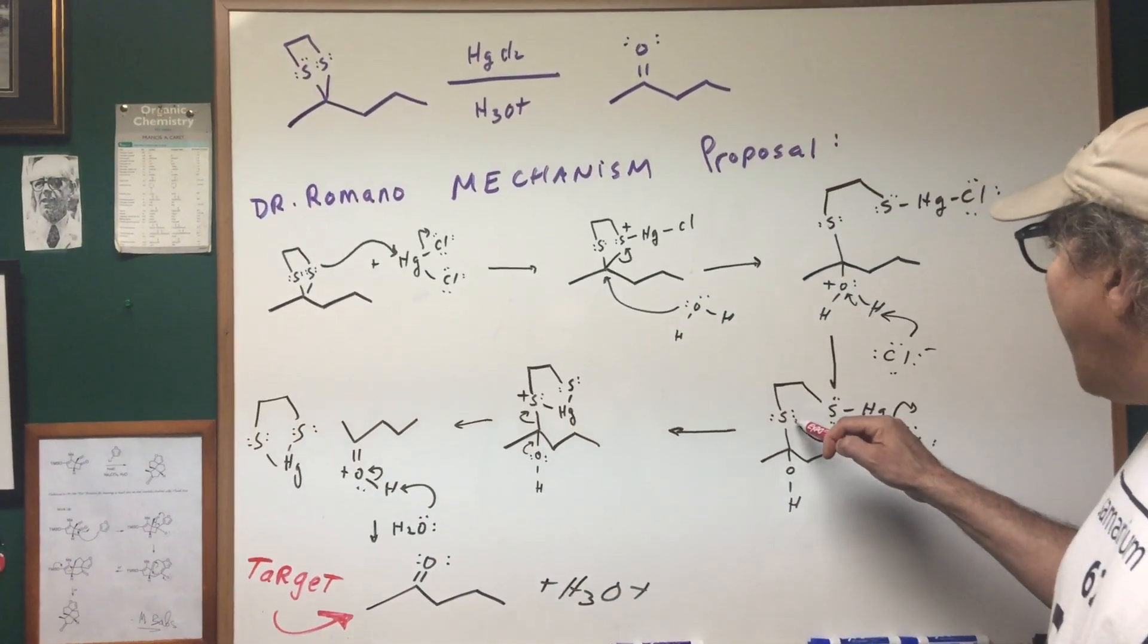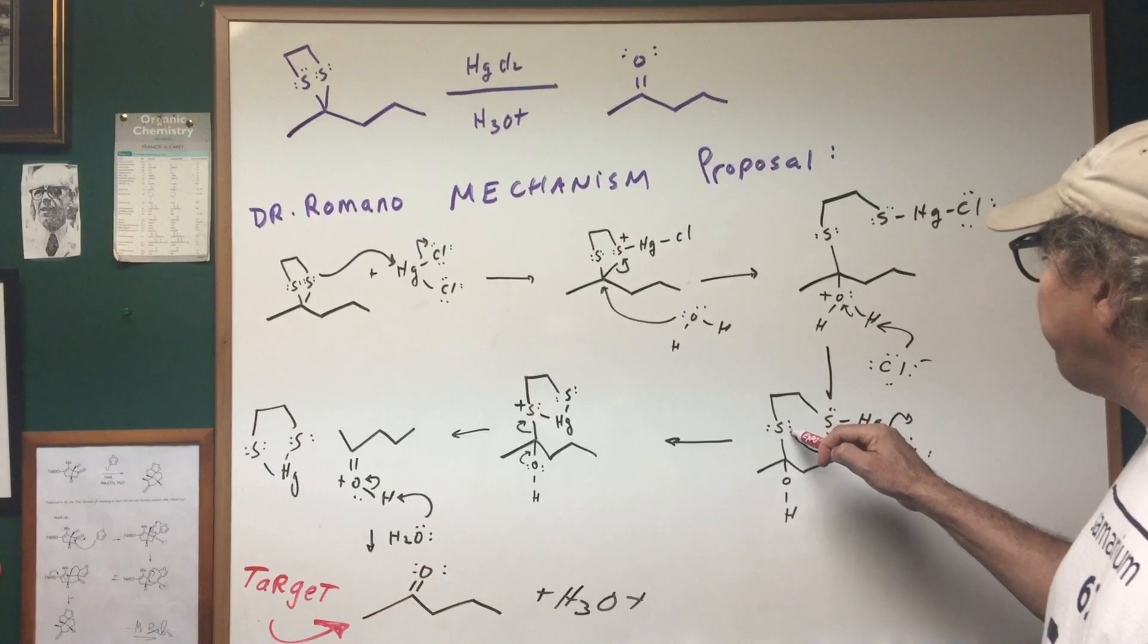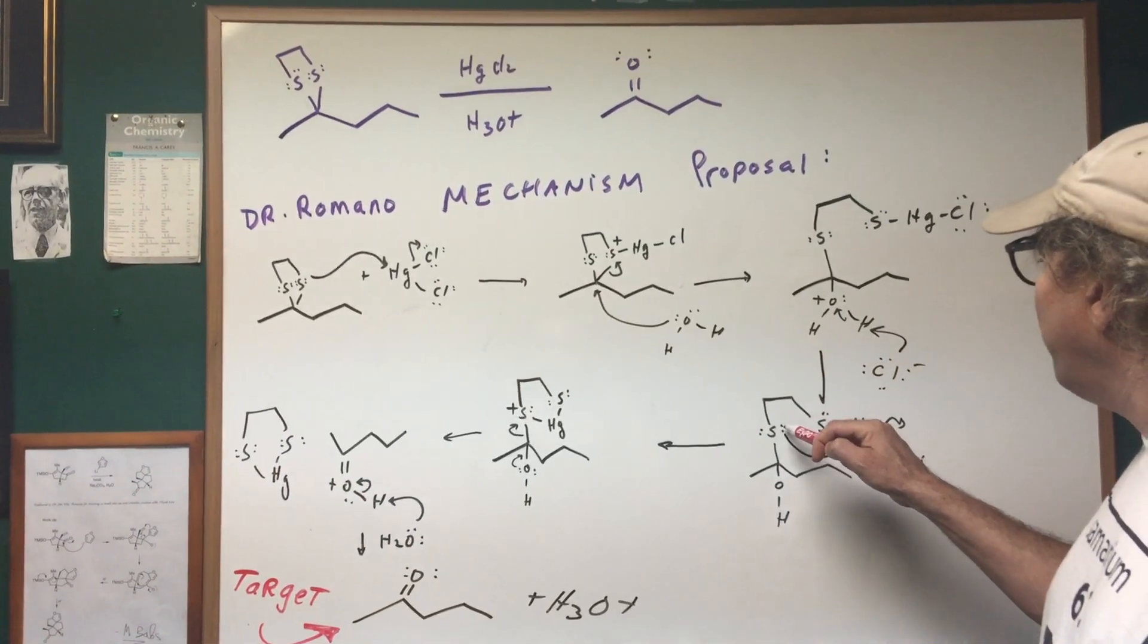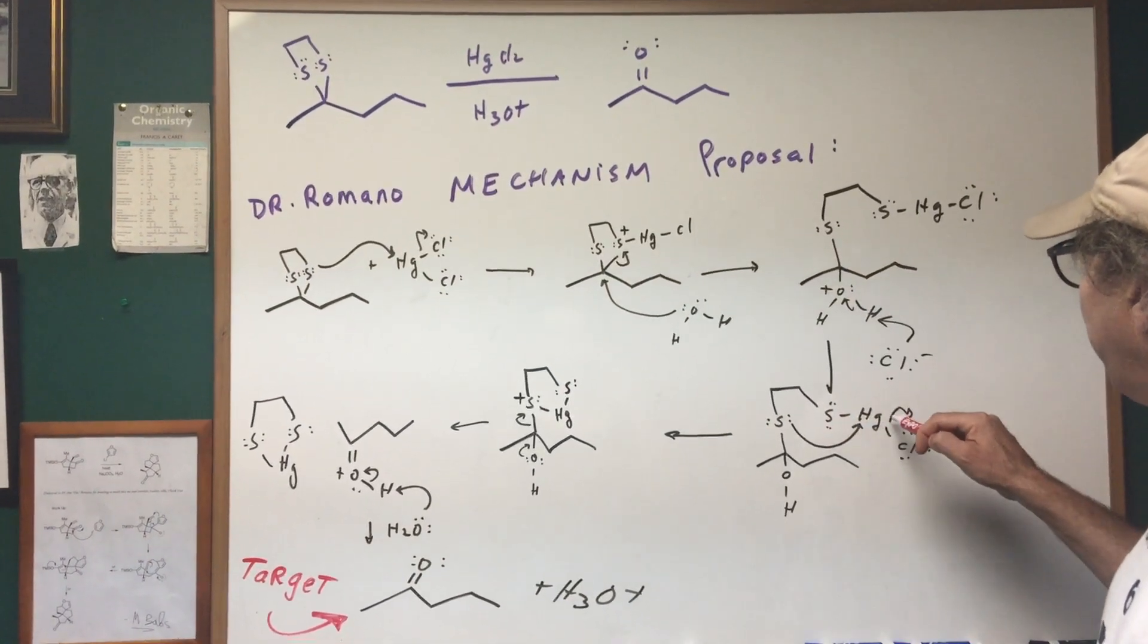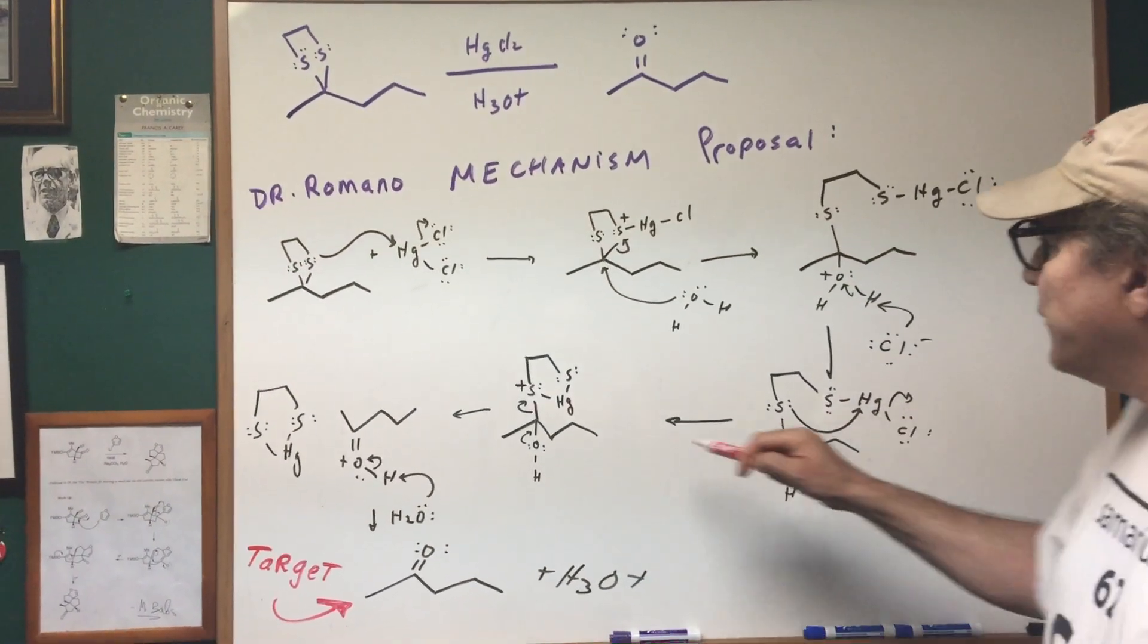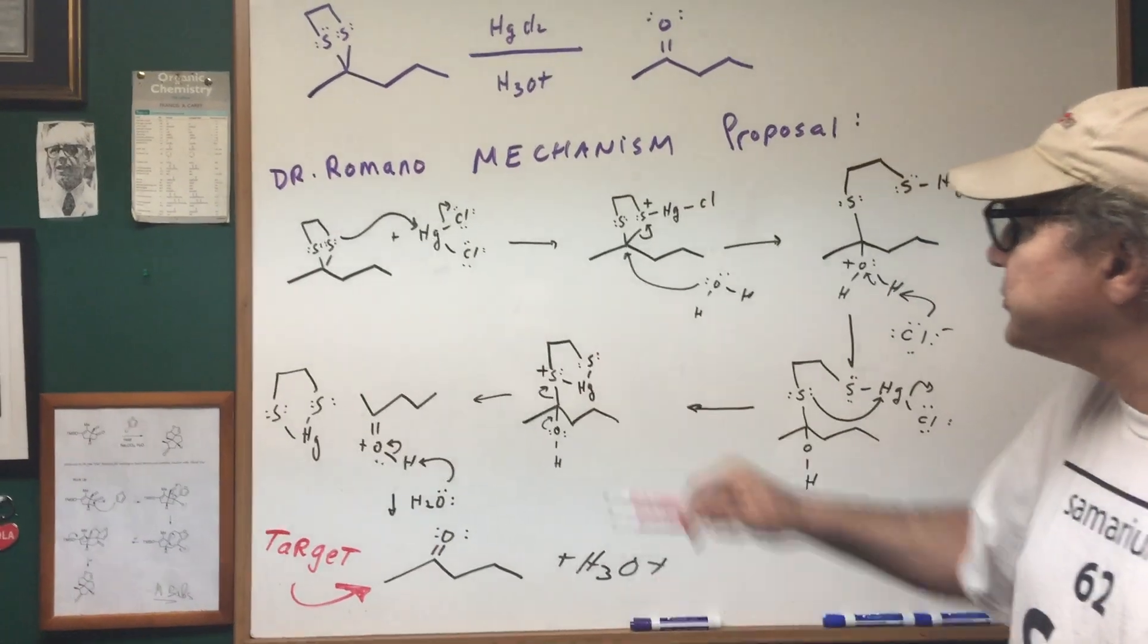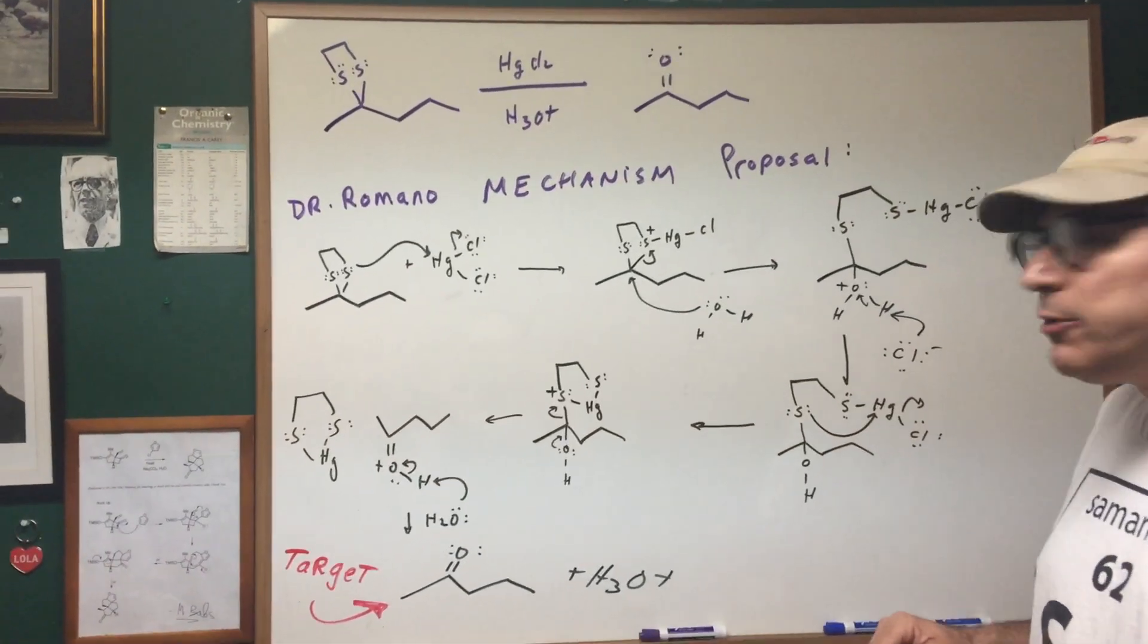Now even water or Cl- could pull off the H, and now we get an OH. Now watch this move. I'm gonna now take this sulfur and do an attack like this. I'm gonna do an attack on the mercury. This group leaves and I now form this cyclic structure. Boy, does that look kind of weird.